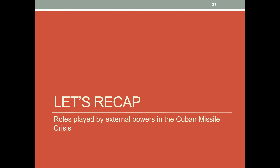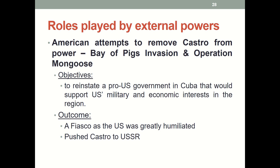To recap the roles played by external powers: First, the United States kept trying to remove Castro from power — from the Bay of Pigs invasion to Operation Mongoose — because they wanted to reinstate a pro-US government in Cuba that would continue to support US military and economic interests in the region. The outcome, as we know, was a huge fiasco. The United States was greatly humiliated, and this simply pushed Castro into the arms of the USSR.